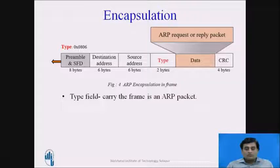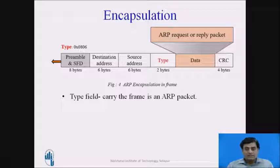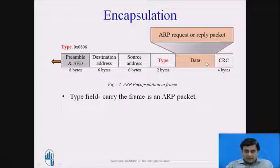Once ARP maps logical addresses to corresponding physical addresses, the packet from the network layer is passed on to the data link layer, where it is encapsulated in a frame. In figure 4, you can see how the ARP request or reply message is encapsulated in a frame. The type field in the frame indicates that the data contained in the data field is an ARP request or reply packet.